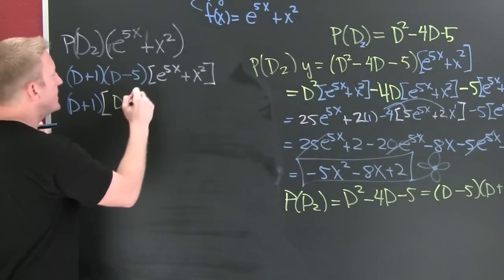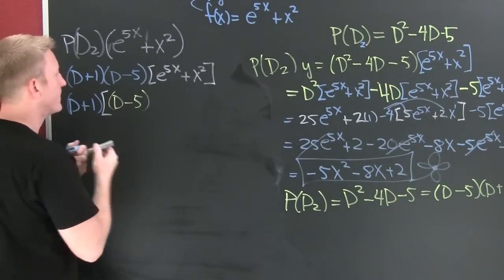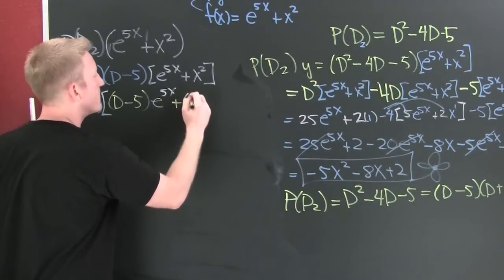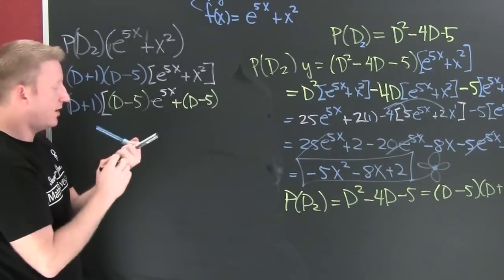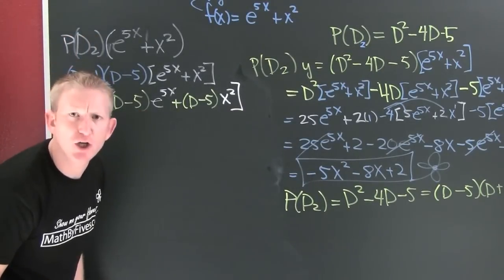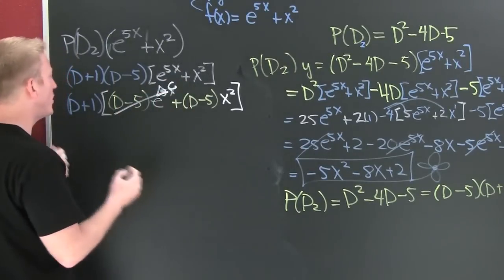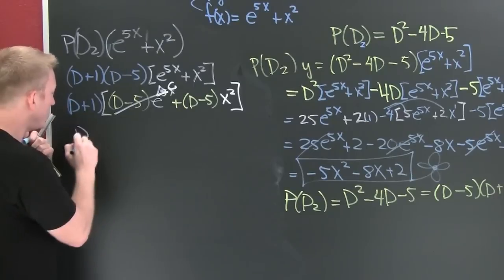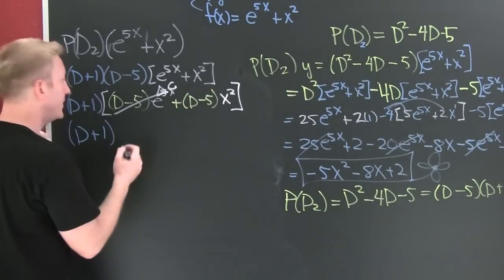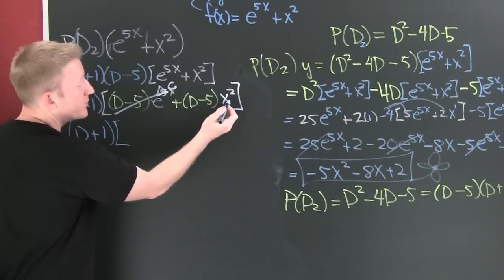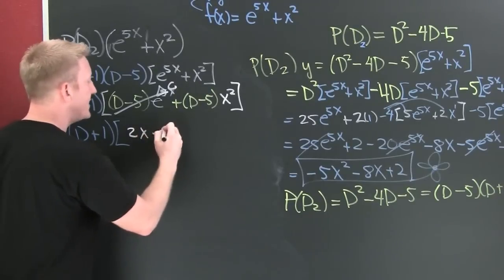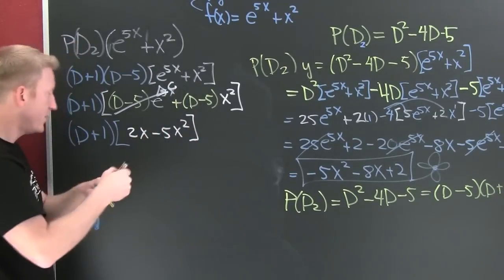I'm talking about D minus 5 acting on e to the 5x and D minus 5 acting on x squared. What happened here? Annihilation. That just happened five minutes ago. So now this thing, I need to take one derivative of this and subtract out five times the function. So it appears that we're going to see 2x minus 5x squared.